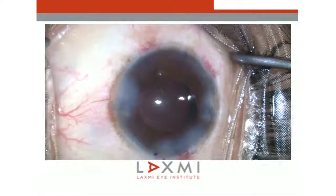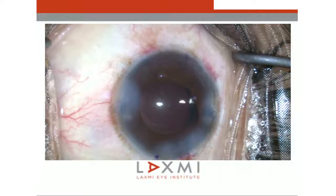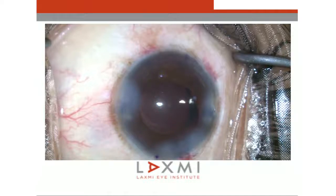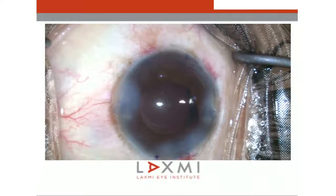Practice is essential for Malyugin ring insertion and removal. This can be done on a goat's eye or in a wet lab. For those on the verge of improving their phaco, there is nothing like the wet lab — even if you cannot practice hard cataracts, you can learn many steps. Don't miss any opportunity; even if the cornea is hazy, peel the epithelium or use a hygroscopic liquid to practice.